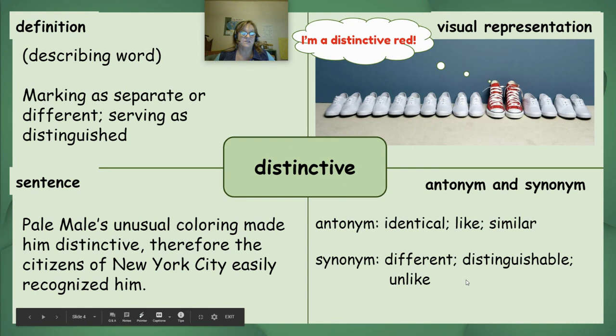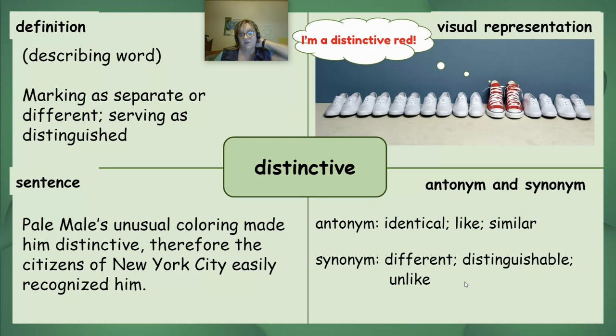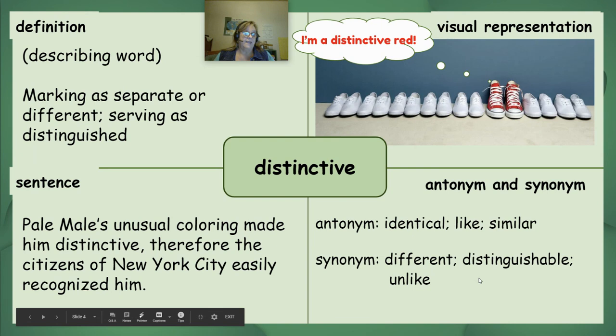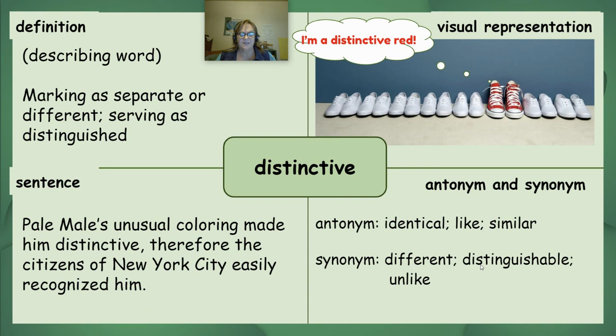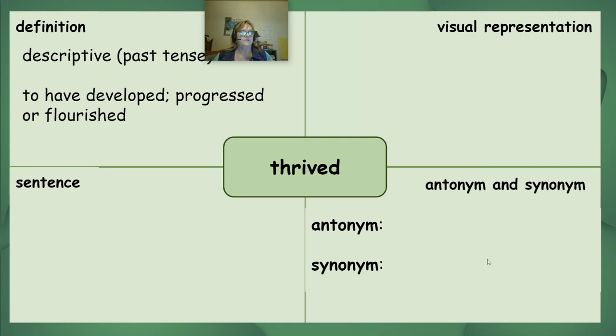I'm going to provide the definitions for the next three words, but you will need to complete the rest of the graphic organizers for those words, just as we have done for 'distinctive.' This will happen at the end of our lesson today, so take notes to see how you can think of visual representations, use the words in good sentences, and identify antonyms and synonyms.